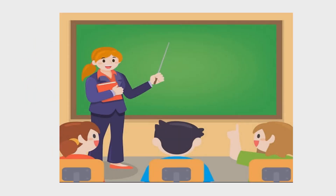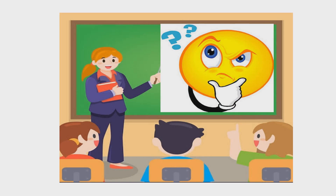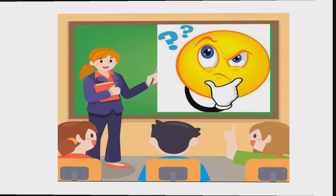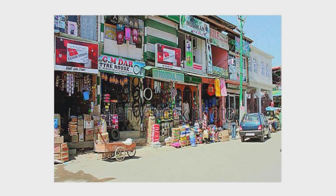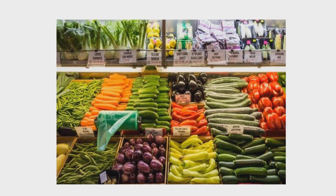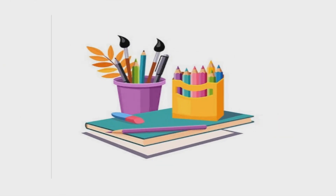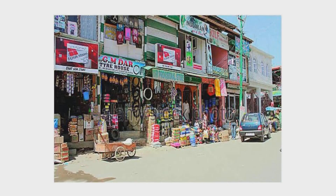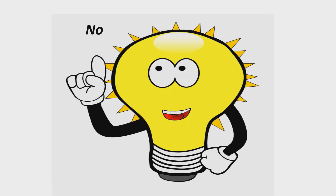The next neighborhood place is the market. Students, what is a market? For example, if you want to buy a chocolate cake, if you want to buy fruits, if you want to buy pencils and pens — from where will you buy these things? Can you buy all daily required items from the same shop? No. So let us know about some common shops in the market.